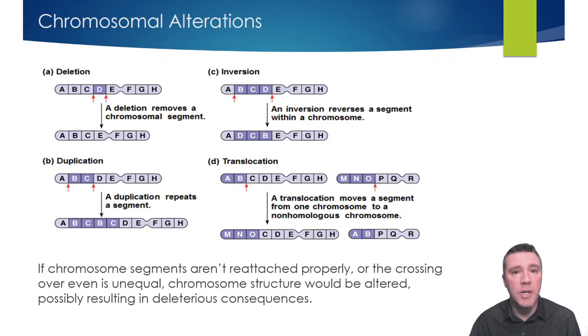A translocation is a chromosomal abnormality caused by an exchange of genetic material between non-homologous chromosomes. For example, the translocation of a segment of chromosome number 21 onto chromosome number 14 is the cause of Down syndrome in 5% of cases.